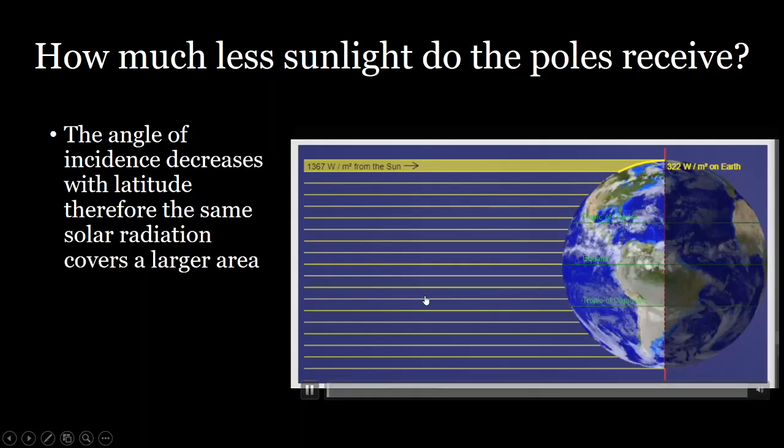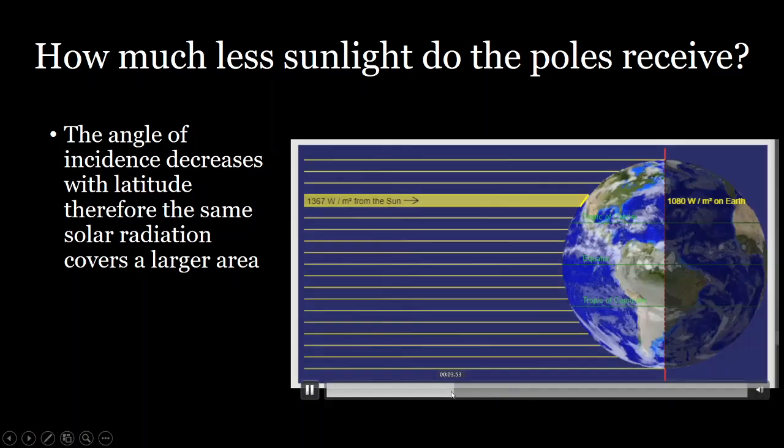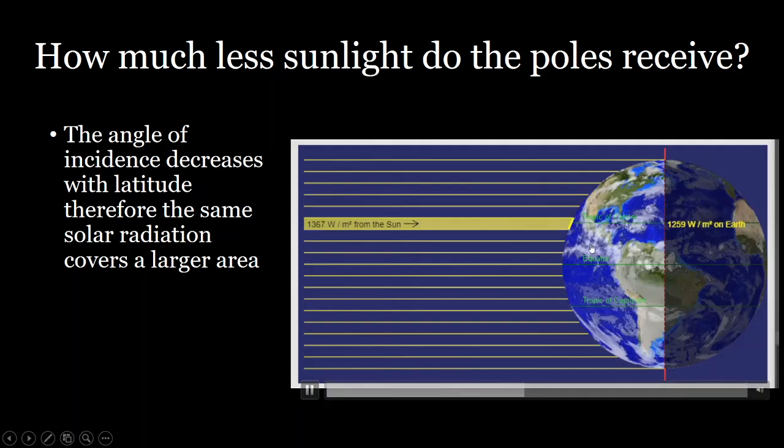And therefore, you have more of that heat actually reaching the surface per unit area. So the amount of energy that reaches the Earth near the poles can be significantly less than what actually reaches the equator regions.